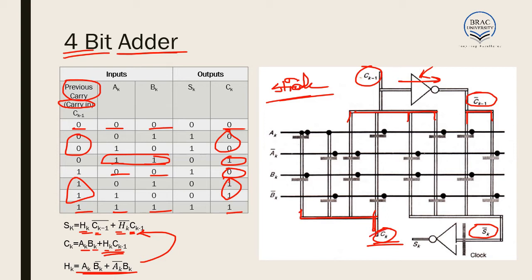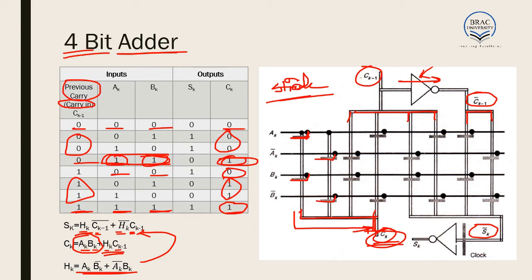We can see that our carry is equal to 1 in the cases where A=1, B=1, C·K-1=0 and A=1, B=1, C·K-1=1. So if A and B are both 1, our carry would be 1 irrespective of the carry-in. As a result, A·B is directly connected to CK. Similarly, A·B̅ and Ā·B̅ are also directly connected to CK, because if A=0 and B=0, CK would be 0 irrespective of carry-in.